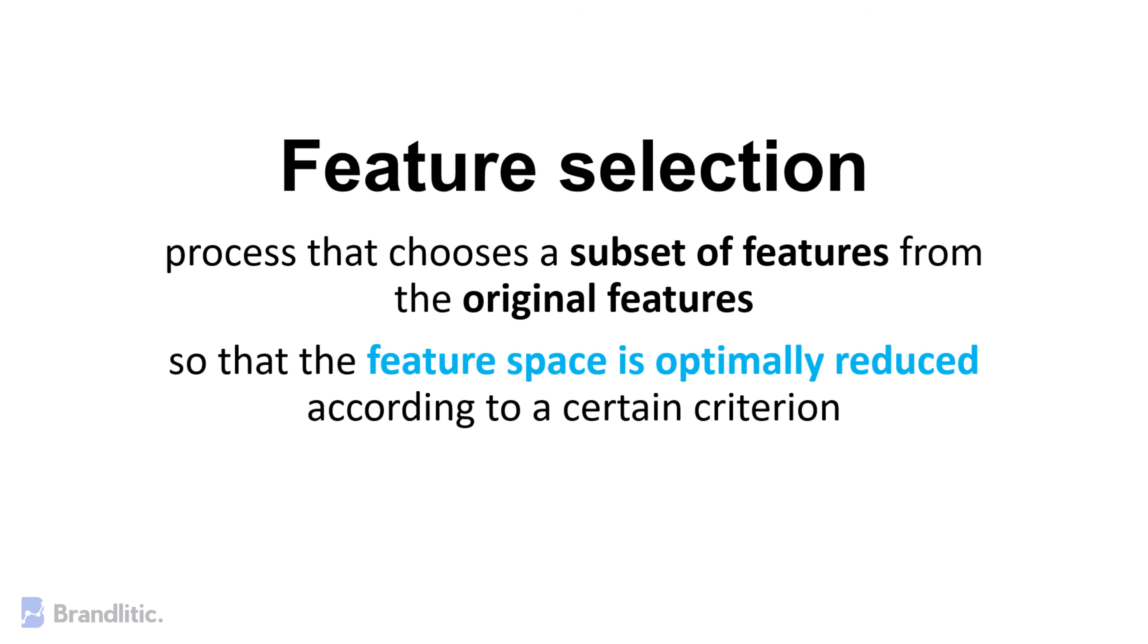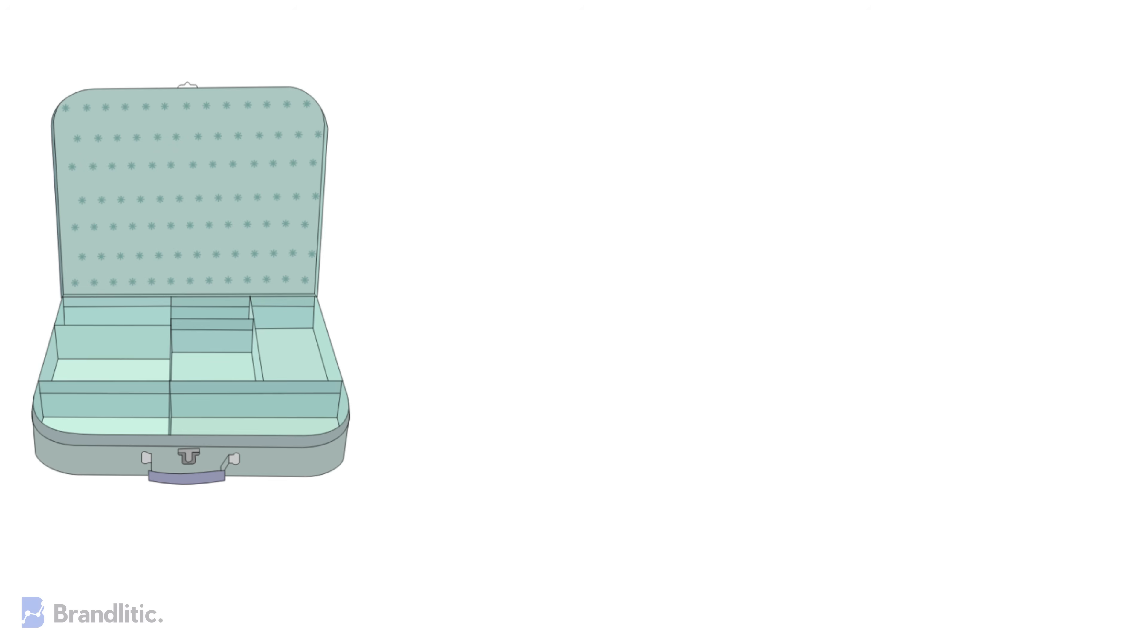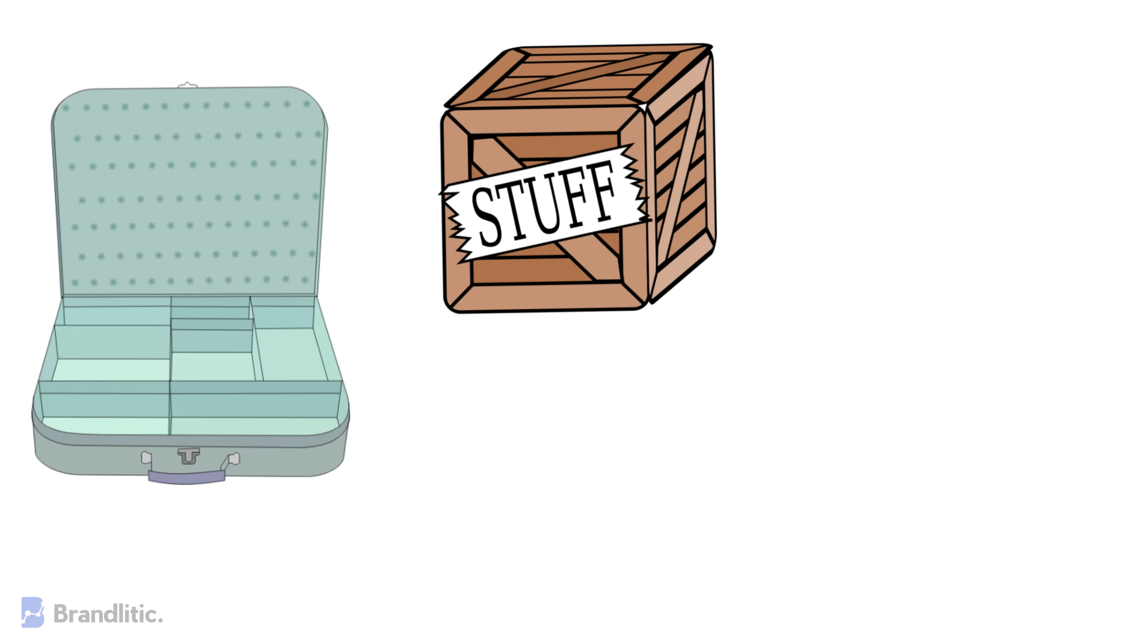Feature selection is a process that chooses a subset of features from the original features so that the feature space is optimally reduced according to a certain criteria. You may think of it like packing for a trip. You wouldn't bring your entire wardrobe with you, but you would rather choose the essentials.